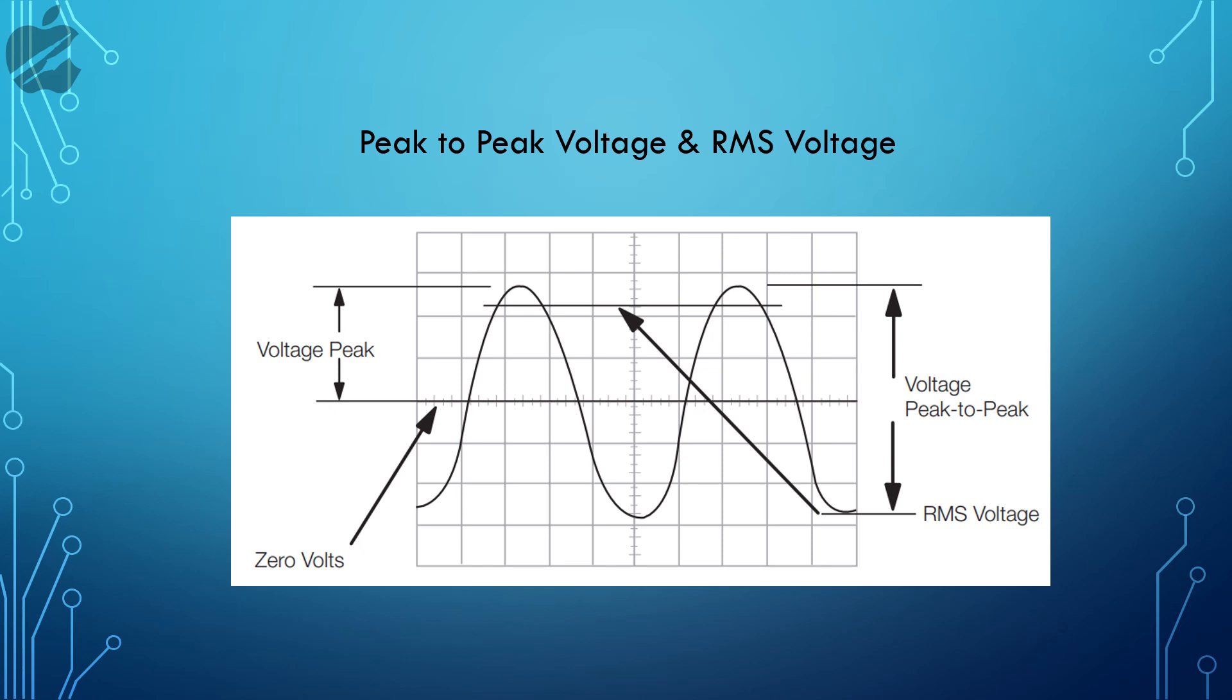The peak-to-peak value of AC is defined as the difference between its positive peak and its negative peak. The RMS is also known as the quadratic means of AC voltage.